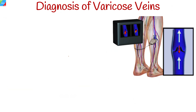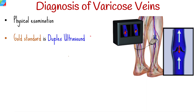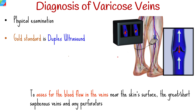How are varicose veins diagnosed? During a physical exam, the doctor will check your legs while you are standing. The gold standard for varicose vein investigation is duplex ultrasound, done to assess blood flow in the veins near the skin's surface, including the great or short saphenous veins and any perforators.